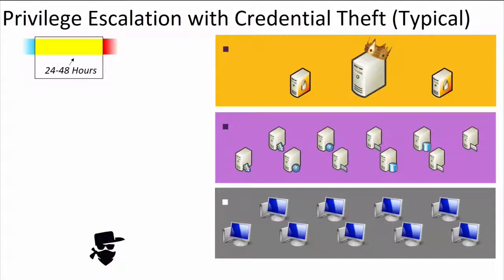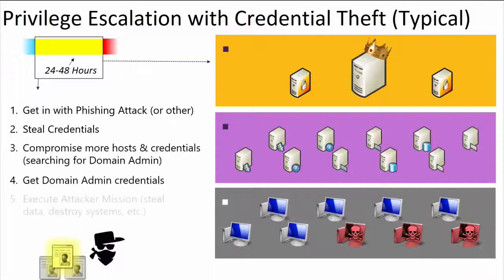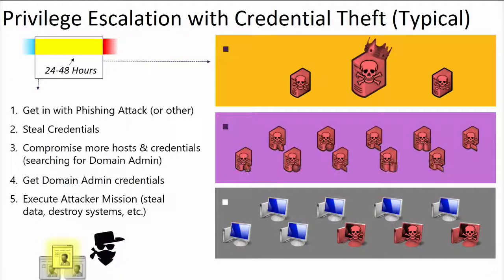Then we have pass the hash again — we can use privilege escalation with credential theft. The timeframe is usually one to two days. It could start with a phishing attack, and once credentials are stolen, you can search for domain admin and become the domain administrator. I want to highlight pass the hash again because it's really important. Even though security experts and Microsoft recommend following best practices, it's not always done. Sadly, many hotels and corporations are still on Windows XP.